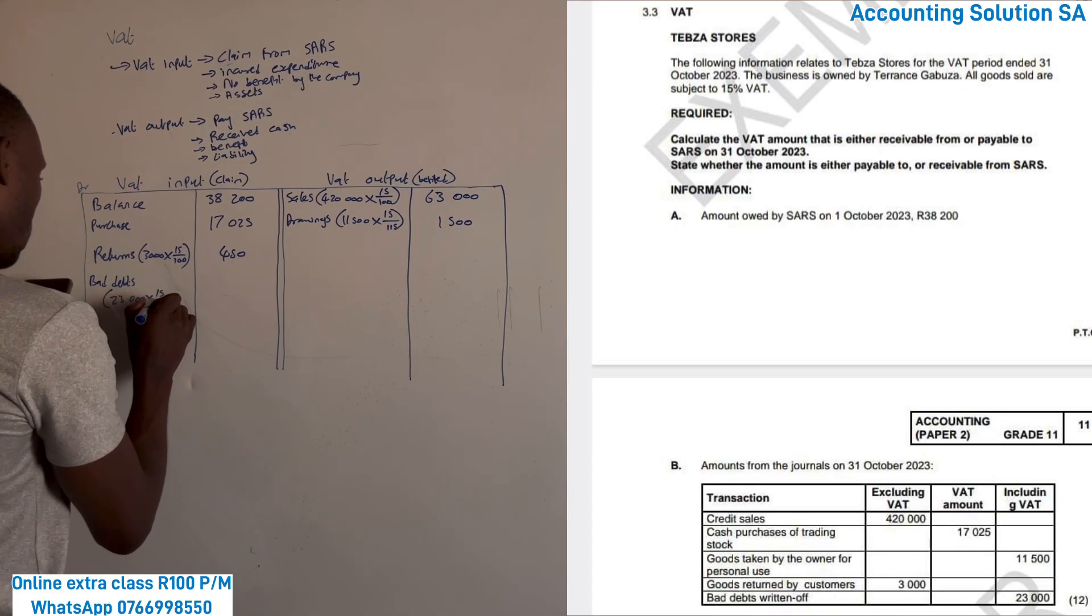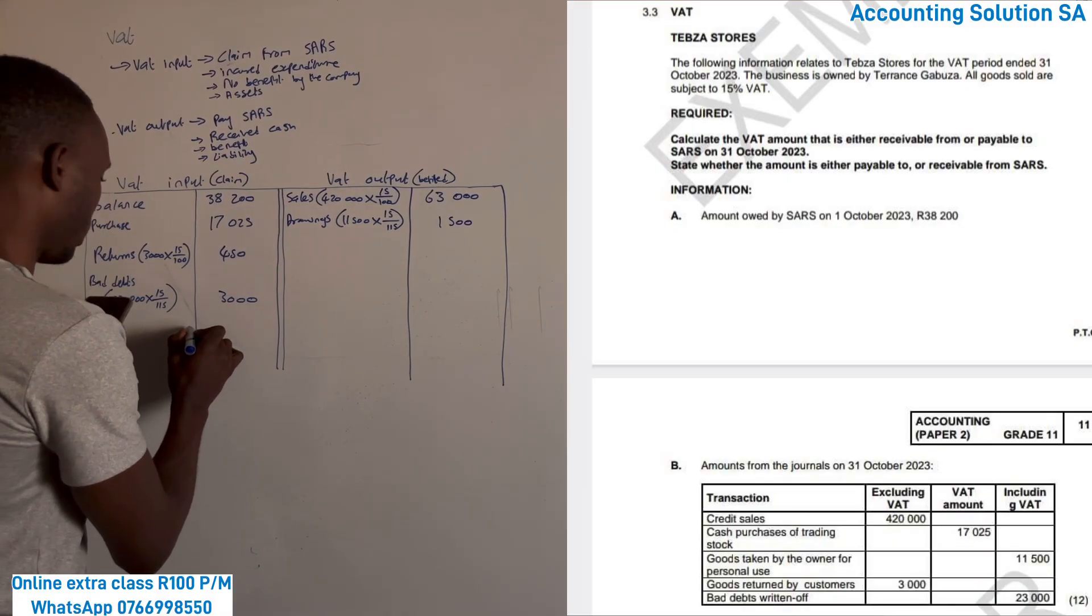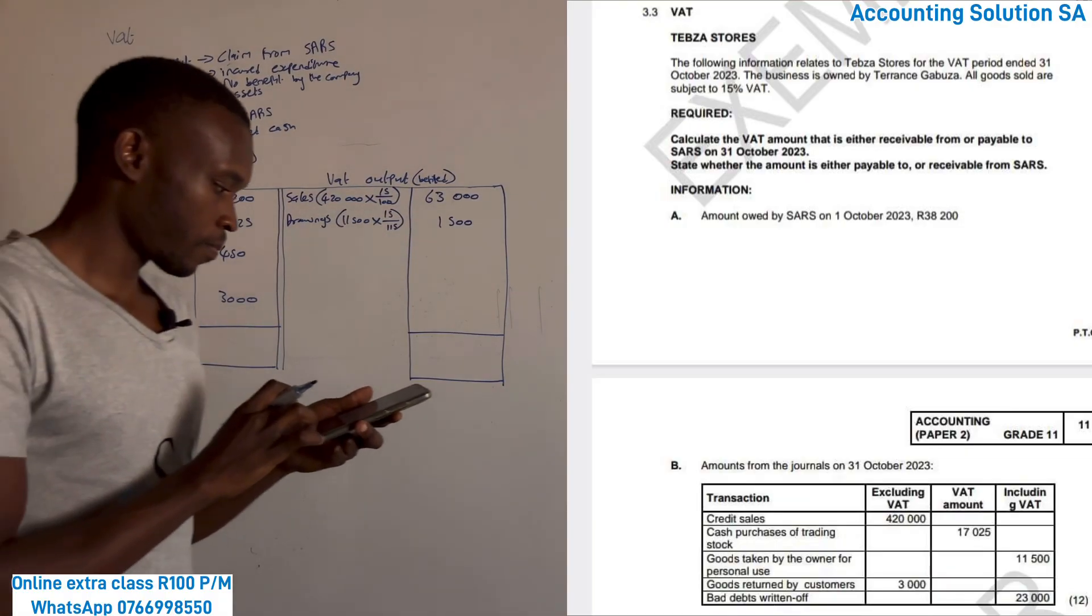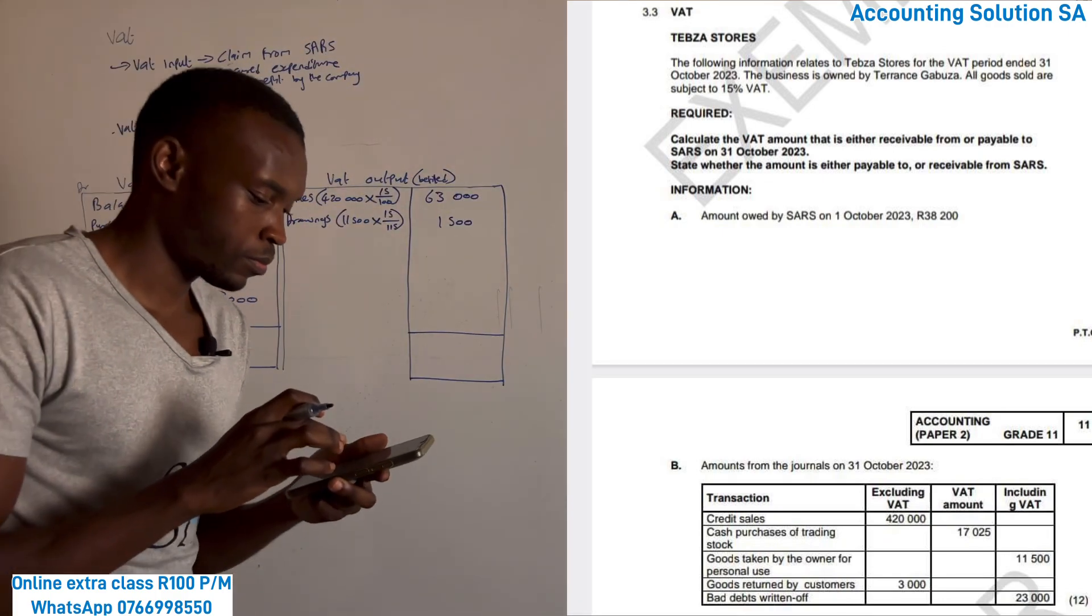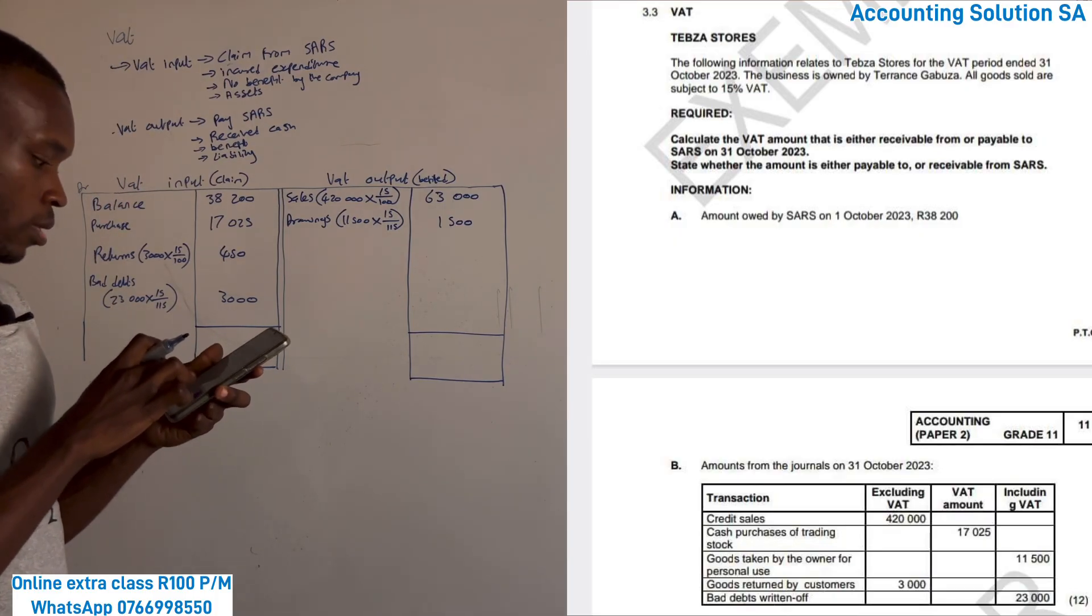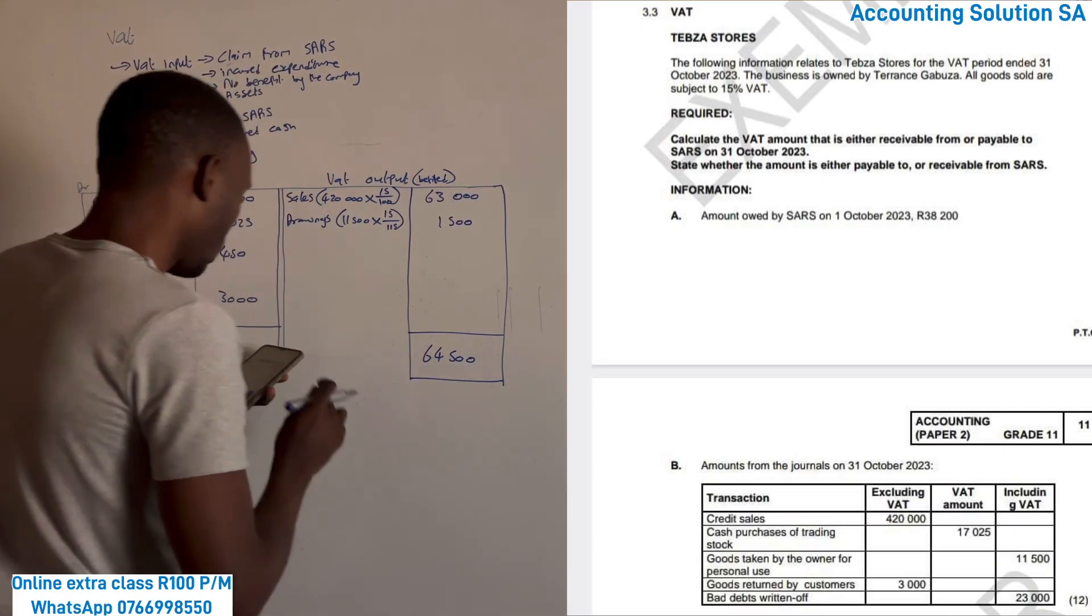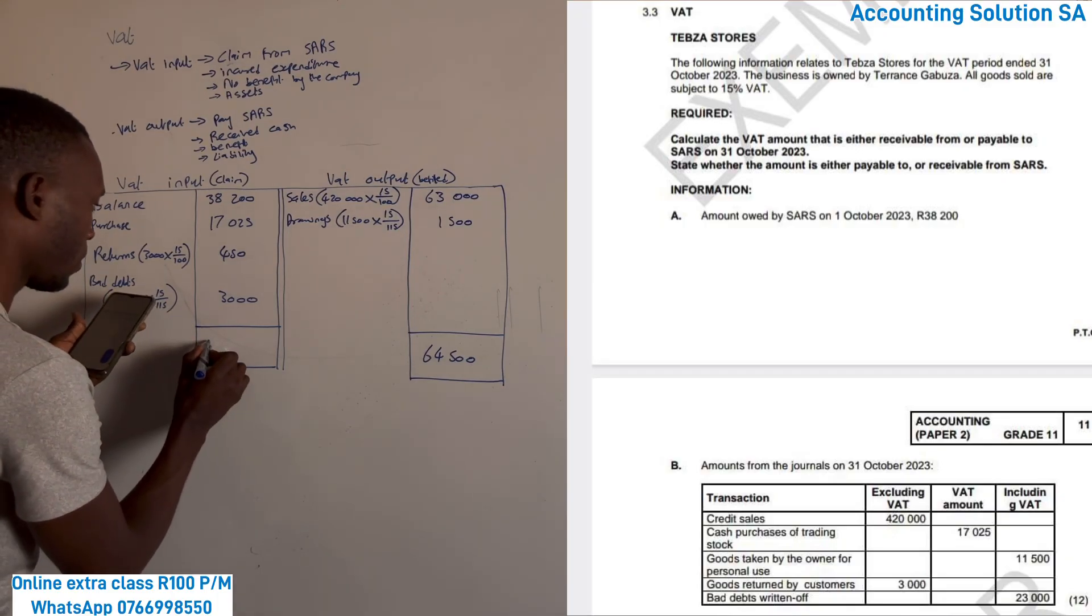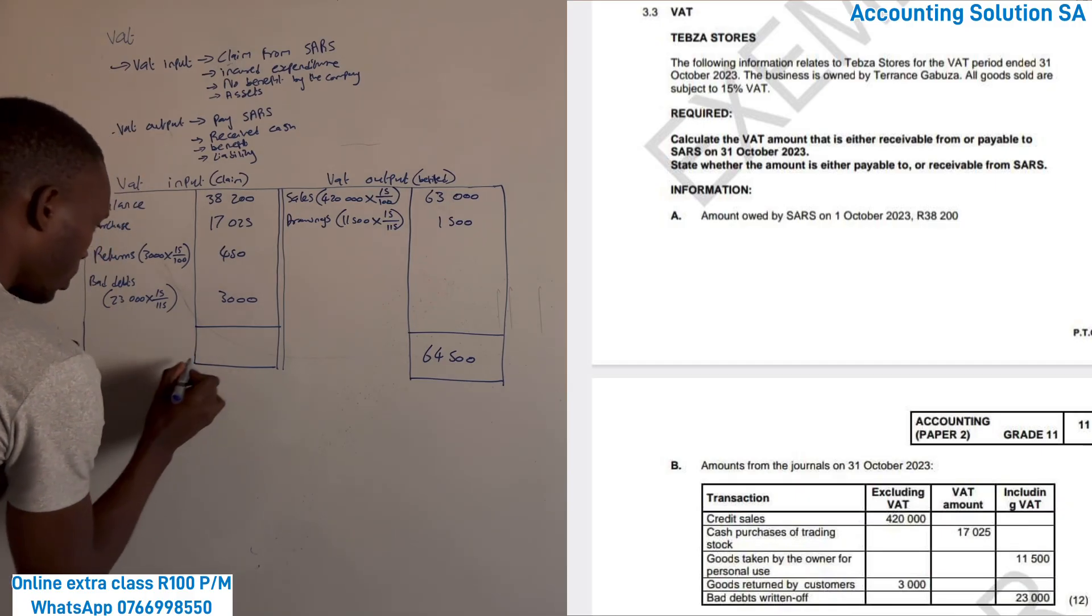Now we have to calculate which side is higher. Obviously this side is higher. I need to recalculate here. It's 63,000 plus 1,500, it's gonna give us 64,500. And this side is 38,200 plus 17,025 plus 450 plus 3,000, it's gonna give us 58,675.